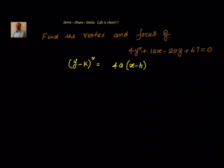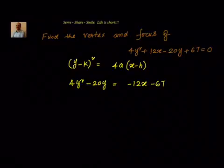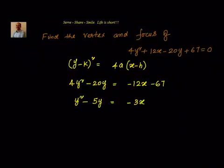First we will try to keep y terms on the left side and take the x terms to the other side. We will have 4y² - 20y = -12x - 67. Now we want (y - k)², so we will divide by 4 throughout. We get y² - 5y = -3x - 67/4.